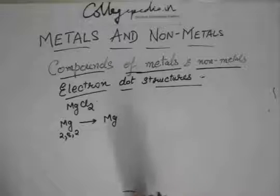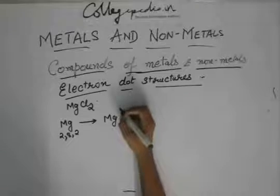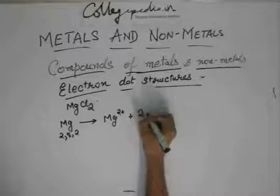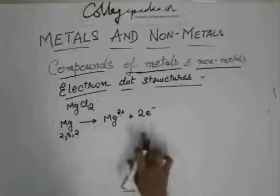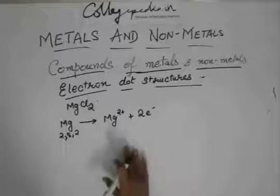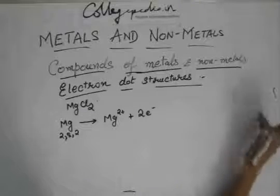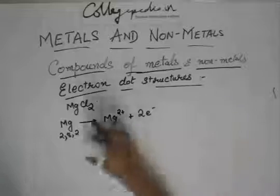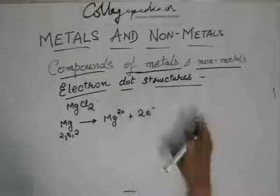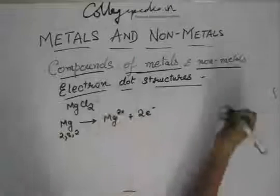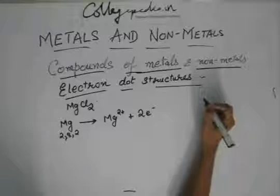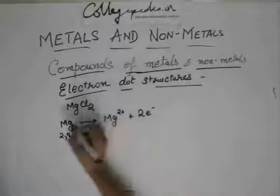When Mg donates two electrons, there are two negative charges less, or in other words two positive charges extra, so it becomes an Mg²⁺ ion. In all these equations, the total charge must be balanced on both sides — just as the total number of atoms is balanced in a balanced equation — because charges can neither be created nor destroyed.